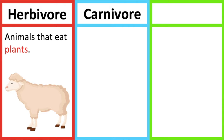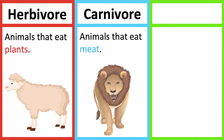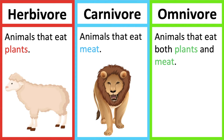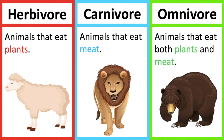For example, lions eat only meat, therefore they are carnivores. Omnivores are animals that eat both plants and meat. For example, bears eat plants and animals, therefore they are omnivores.